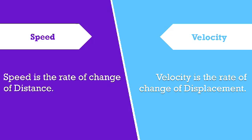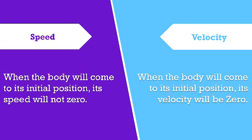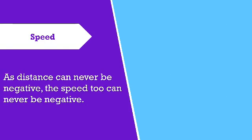When the body will come to its initial position, its speed will not be zero. When the body will come to its initial position, its velocity will be zero. As distance can never be negative, the speed too can never be negative.